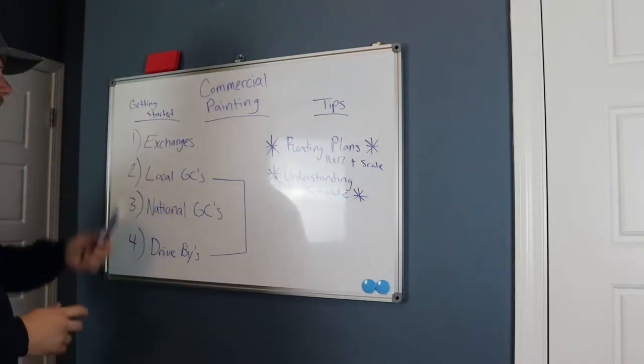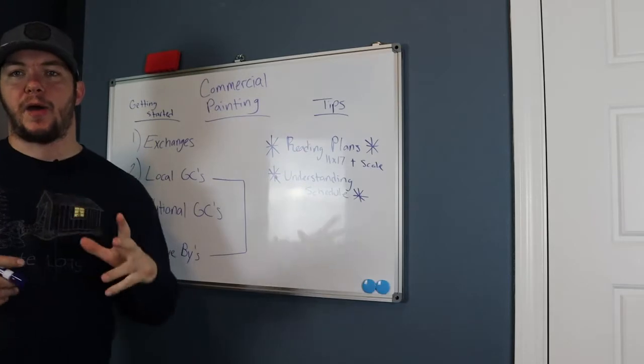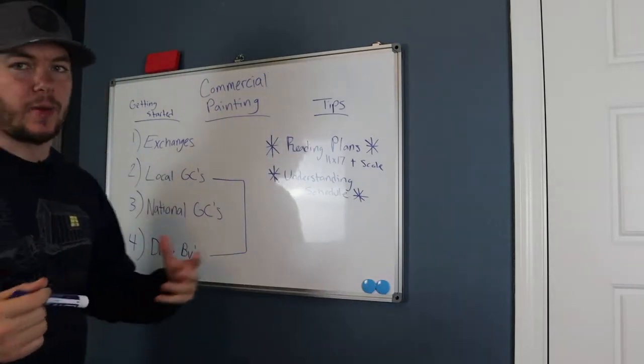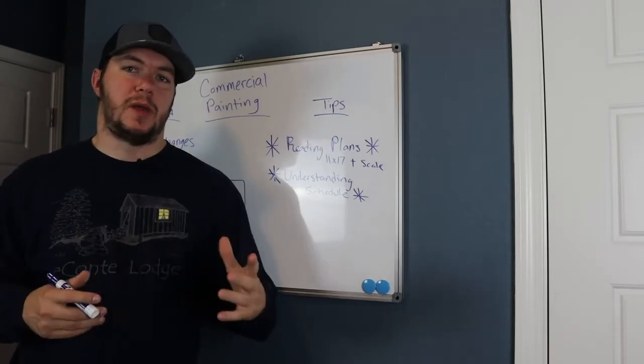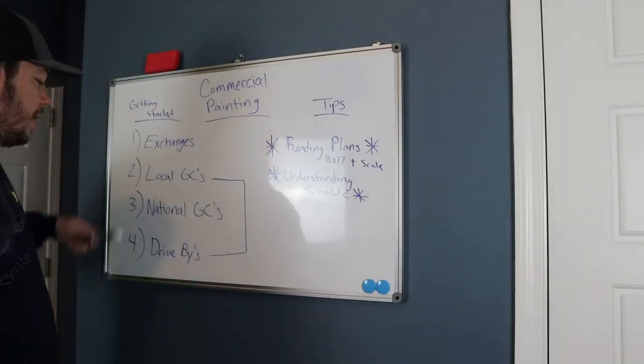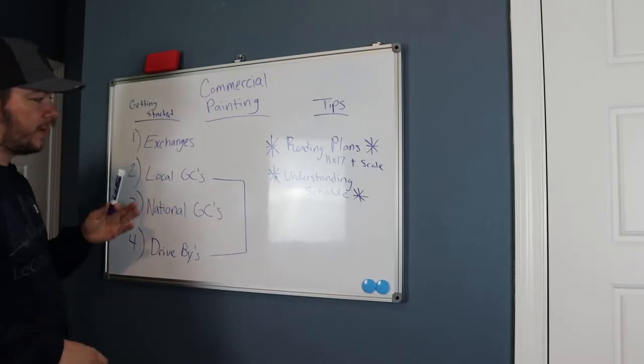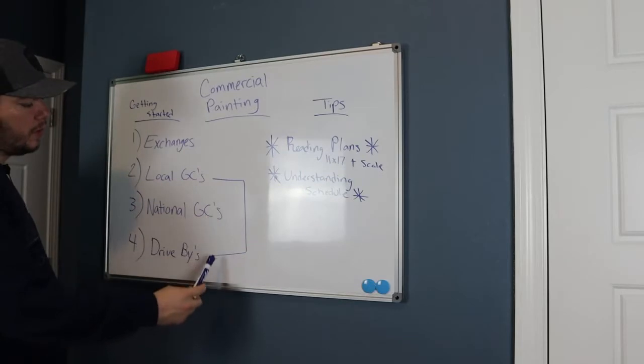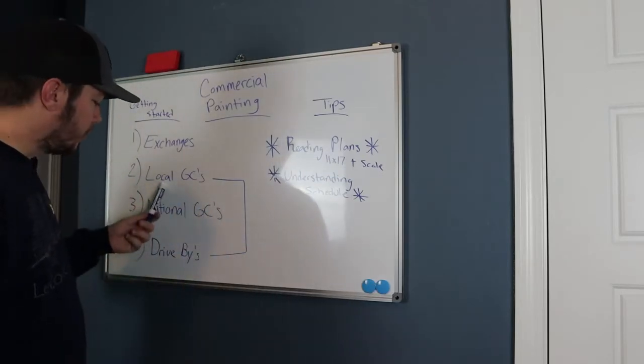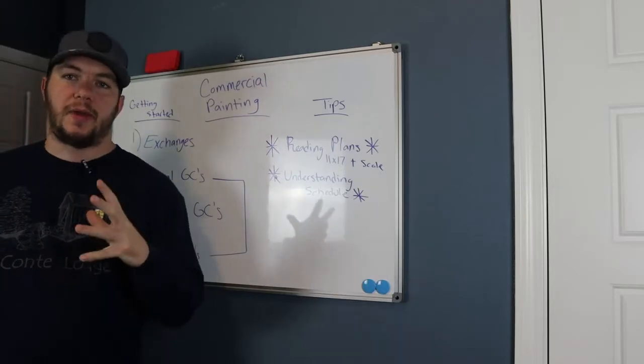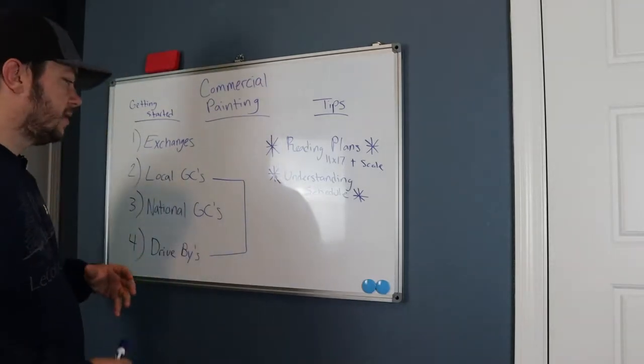First thing I want to go over is this list of getting started. This is going to be how you get on bid lists to do commercial painting. A lot of people say, how do I get bids? How do I get in contact with people? This is a list of four methods that I think you need to target. These two are going to be local GCs and drive-bys. I think these are going to be your most effective methods, your easiest methods to get your foot in the door.